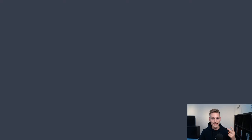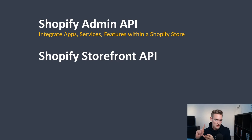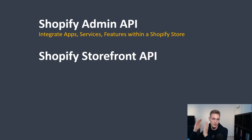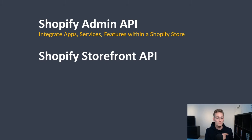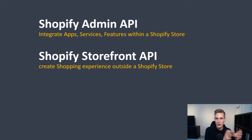Before we get into the practical use cases and examples, Shopify has two main APIs. One is called the Admin API and one is called the Storefront API. The Admin API is used to integrate apps, services, and features within a Shopify store — for instance, collecting email addresses on your front page and passing them to your third-party email marketing tool. The Storefront API, on the other hand, is used to create shopping experiences outside or apart from a Shopify store, such as giving customers the opportunity to buy products in different places than your online store theme.